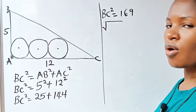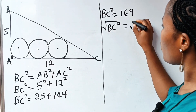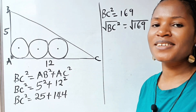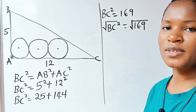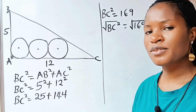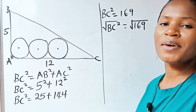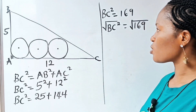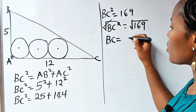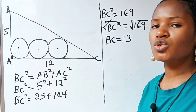Now let's take the square root of both sides. The square root of BC squared equals the square root of 169. We cancel the square root and we are left with BC equals the square root of 169, which gives us 13. So BC is equal to 13.